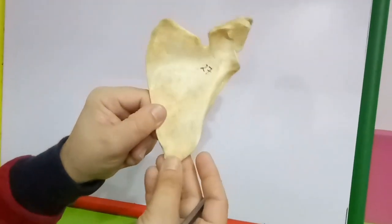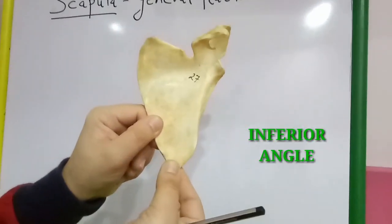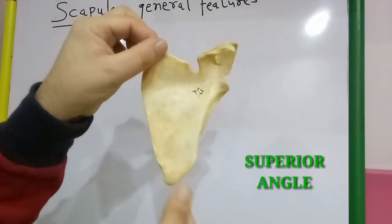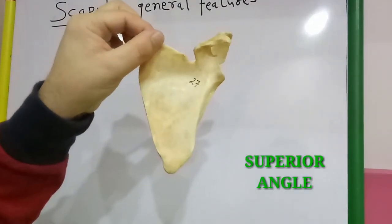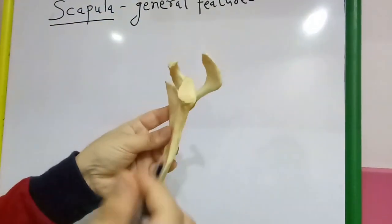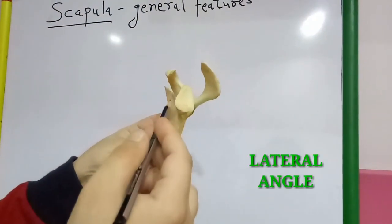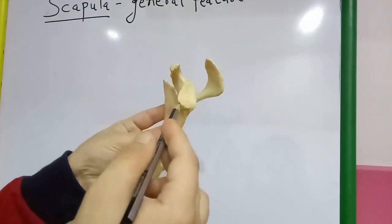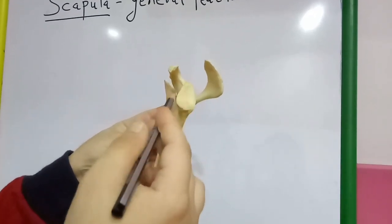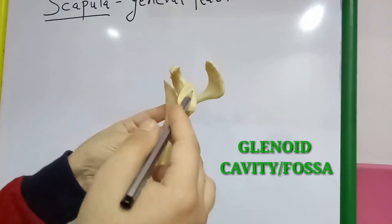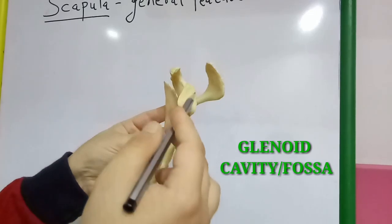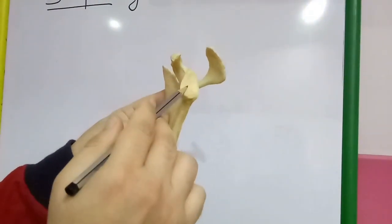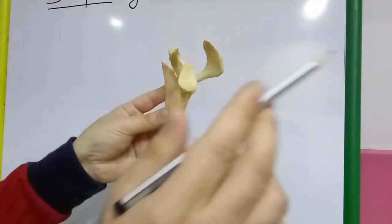There are three angles. This is the inferior angle, this is the superior angle, and the lateral angle is known as the glenoid angle, which bears a large fossa or cavity known as the glenoid fossa or glenoid cavity. This should be facing laterally.